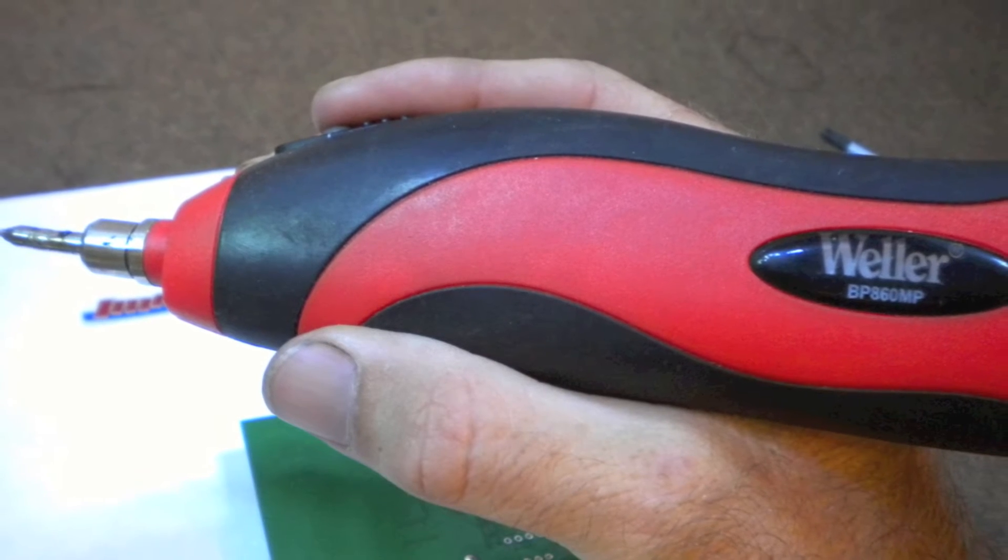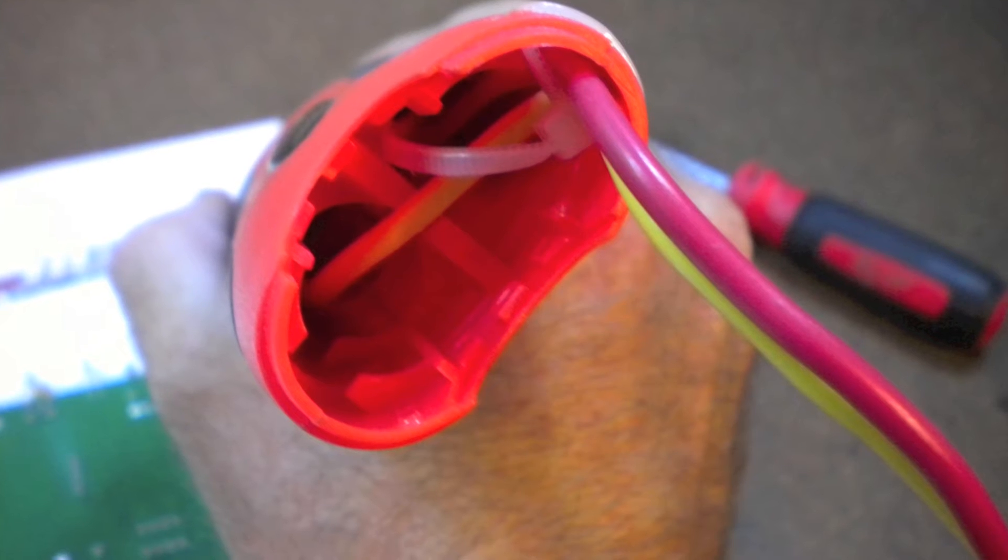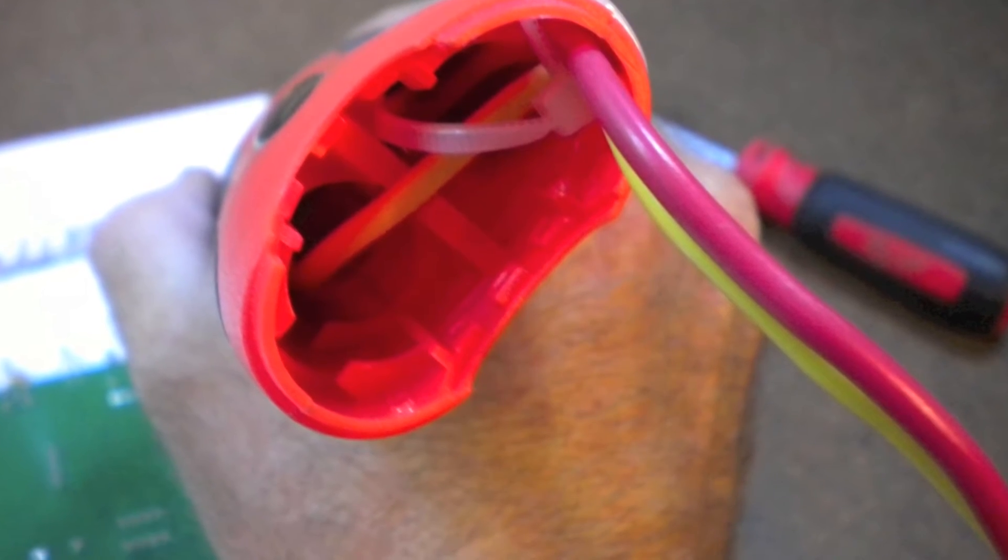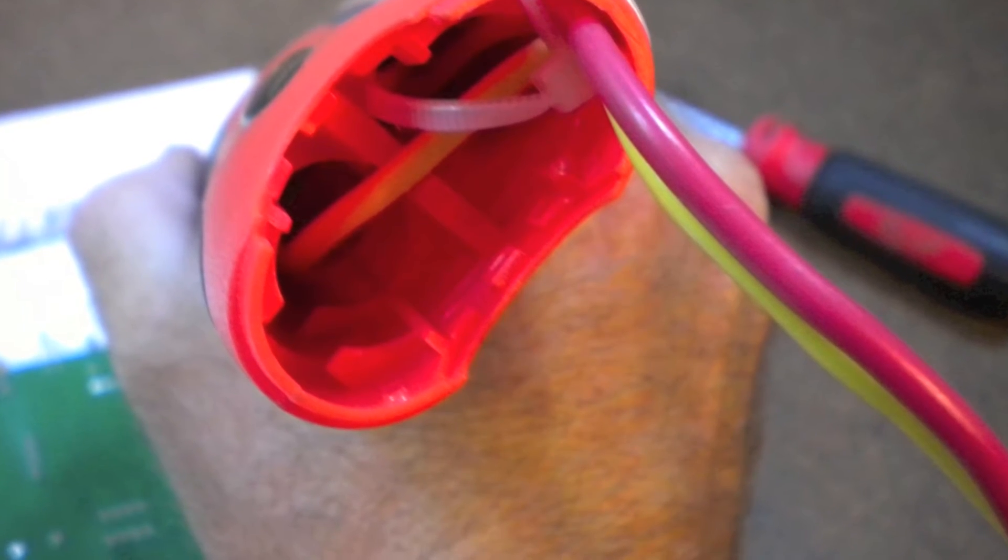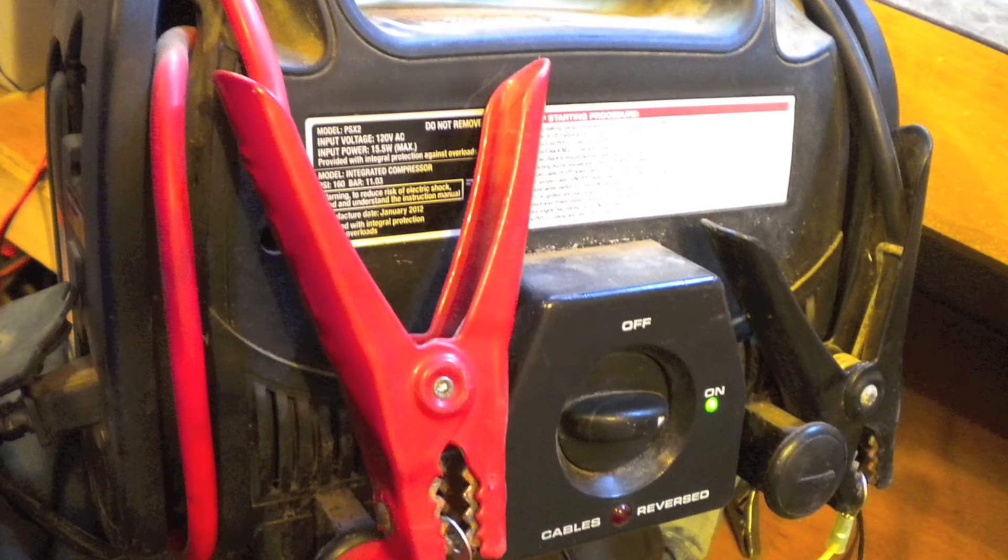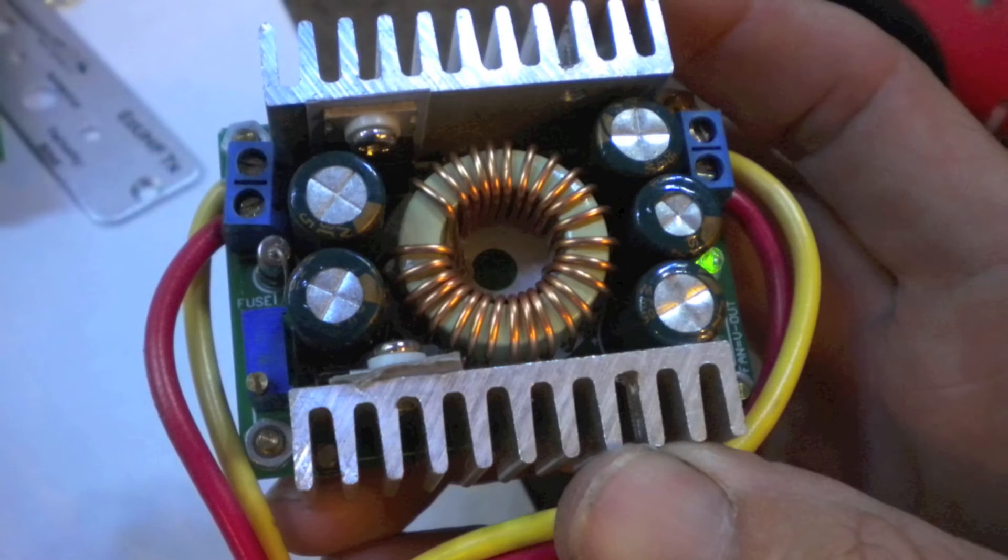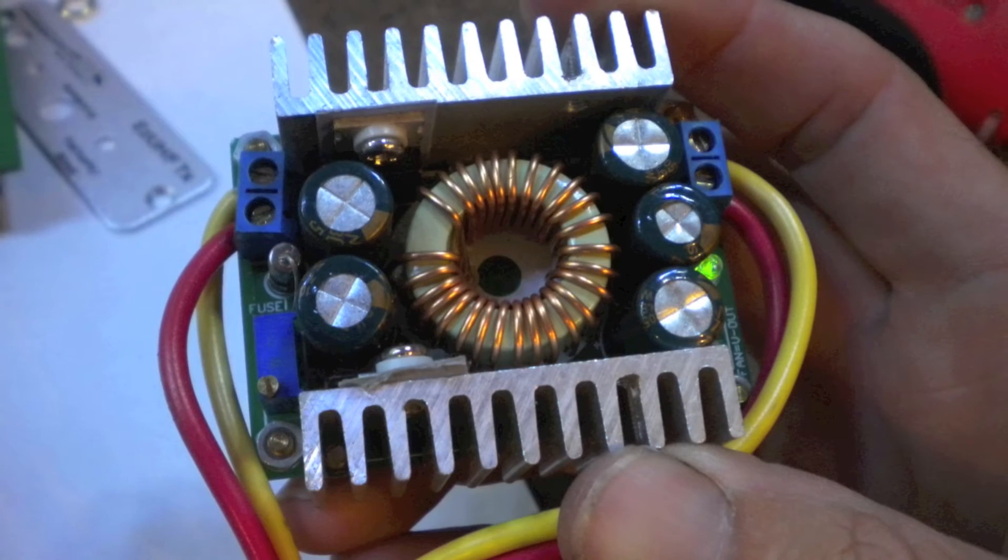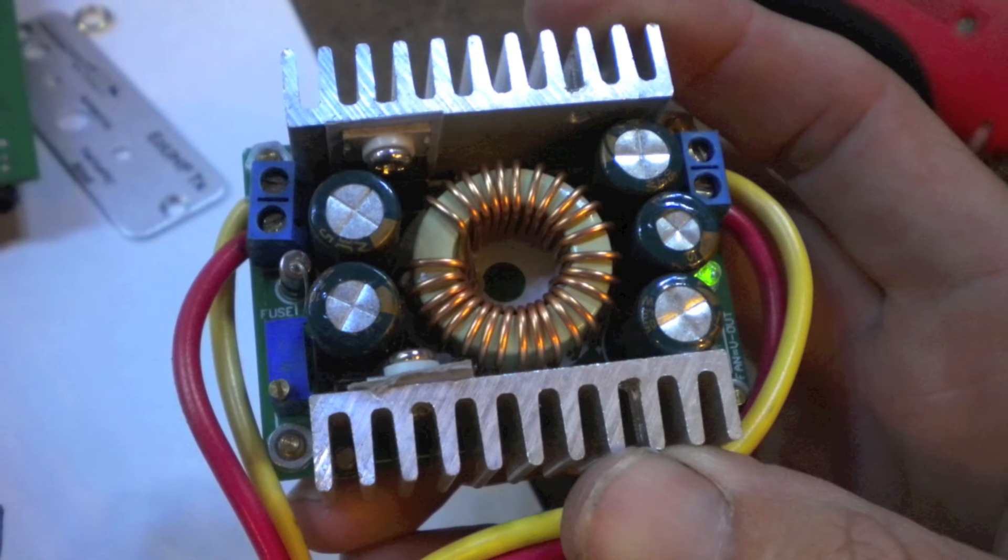I'm using a Weller BP860MP. It was originally battery powered and worked well, but I got tired of replacing the batteries, so I hardwired it and can now run it off any 12-volt power supply. In this case, a portable jumper pack. I use a DC to DC step-down voltage regulator that I adjusted to give the same voltage as the batteries. These are available at very low cost on eBay.